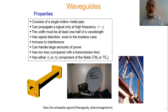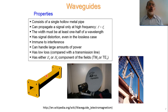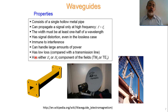So a waveguide can propagate a signal only at high frequency, where the frequency is greater than the cutoff frequency and the width is at least one-half of the wavelength. The wave propagation constant beta inside the waveguide is not linear with omega, so the phase velocity is not constant as a function of frequency. Therefore, there is signal distortion inside the waveguide — even without losses. Any waveguide introduces signal distortion. So if we are looking for low distortion, we prefer transmission lines; if we need high power, we prefer waveguides.